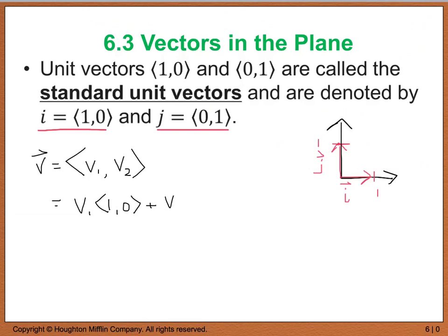and I add that to v₂ times ⟨0, 1⟩, this is really the same thing as saying v₁i plus v₂j, and the v₁ and v₂ are what we call the horizontal and vertical components of v. So then when we look at the sum as a whole, this is what we call a linear combination or a linear combo of vectors i and j.